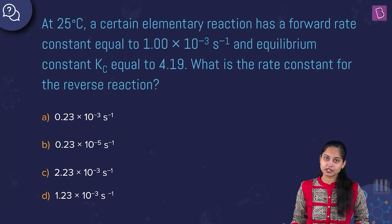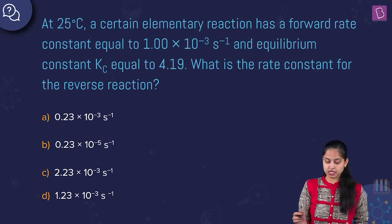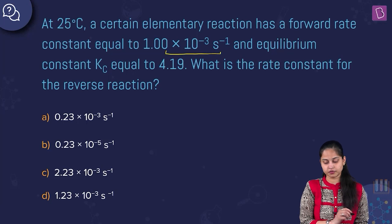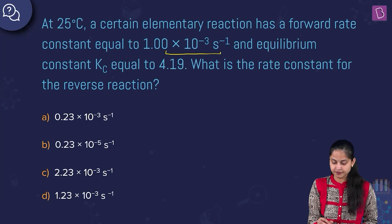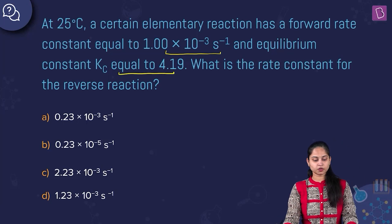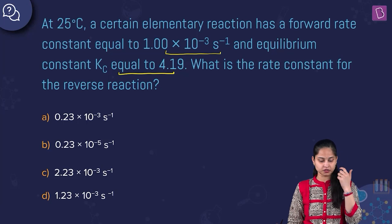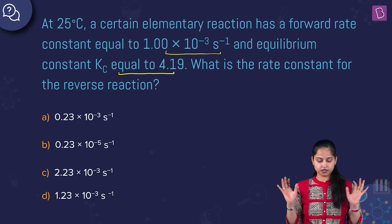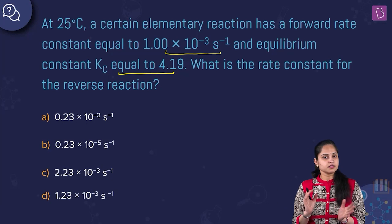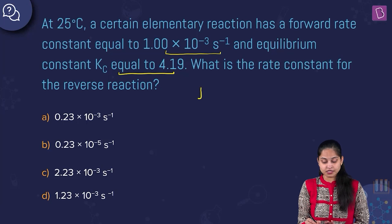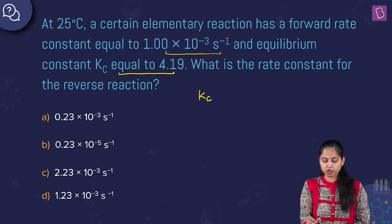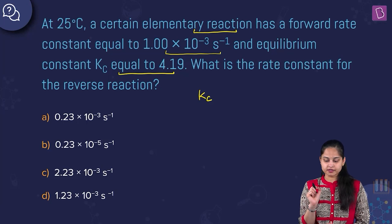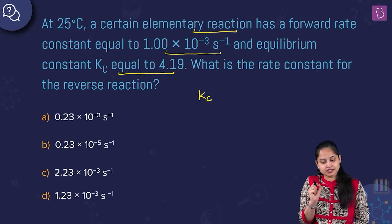At 25°C, a certain elementary reaction has a forward rate constant of 1×10⁻³ s⁻¹ and an equilibrium constant Kc equal to 4.19. What is the rate constant for the reverse (backward) reaction? The equilibrium constant Kc equals the forward rate constant divided by the backward rate constant.